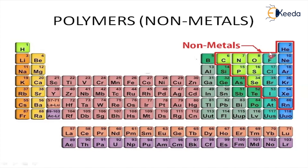Most non-metals are gases. In the periodic table, they are represented under polyatomic non-metal, diatomic non-metal, noble gases, carbon, phosphorus, and sulfur. There are very few non-metals overall. The term 'mer' means one unit, so 'polymer' means many units getting together.